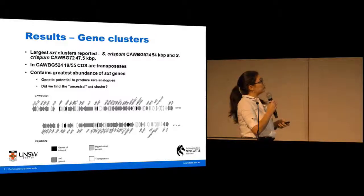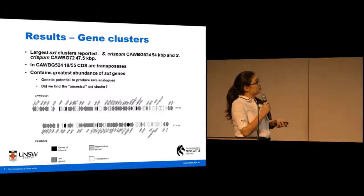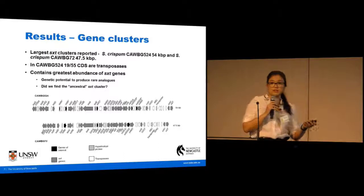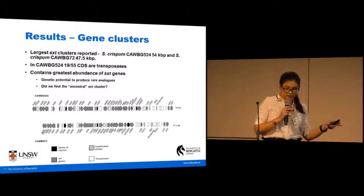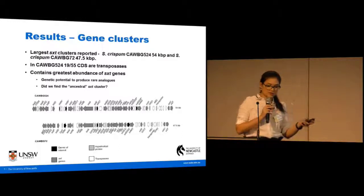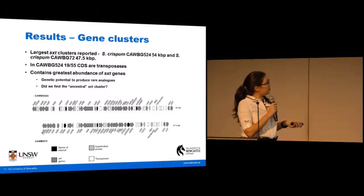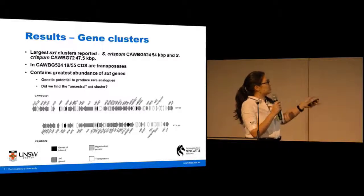What we found were the two largest saxitoxin biosynthetic clusters ever reported. The first one from strain 524 was 54 kilobase pairs in size, and the second one from strain 72 was 47 kilobase pairs in size. To give you context, that's 20 kilobase pairs larger than all other described clusters. And this really comes down to two things: the clusters are incredibly abundant in transposases — 19 out of 50 genes in these clusters were transposases, which are basically fragments of DNA that are able to move around the genome.